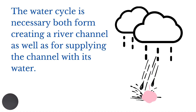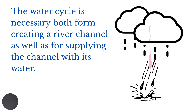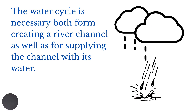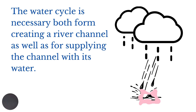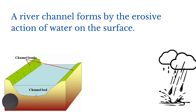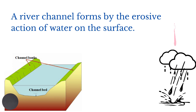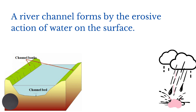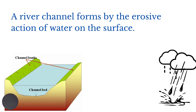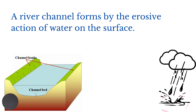The water cycle is necessary both for creating river channels as well as supplying the channel with its water. A river channel forms by the erosive action of water on the surface. When it rains, we might have rain splash that starts to erode the land. Also, as the water flows over the land as overland flow, the land may be eroded, and over time a channel may be created.